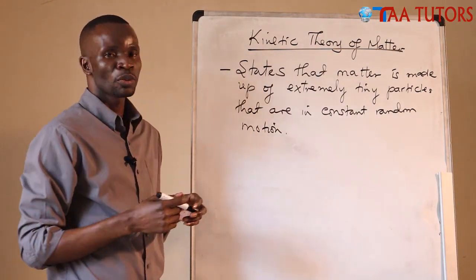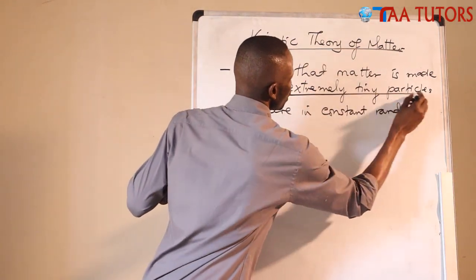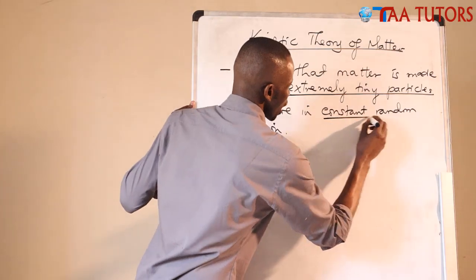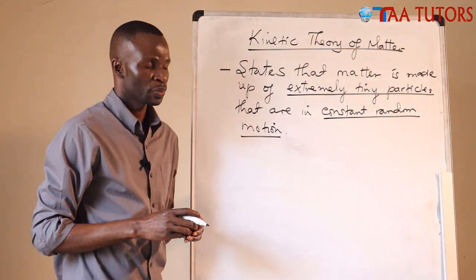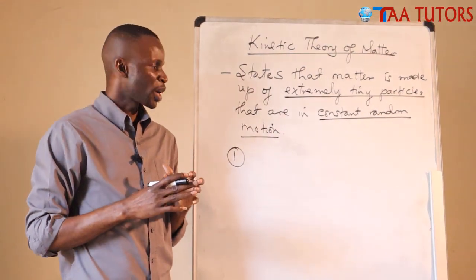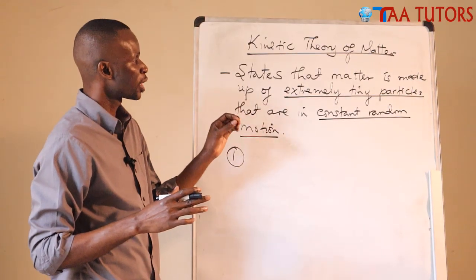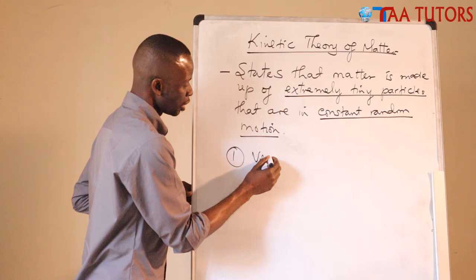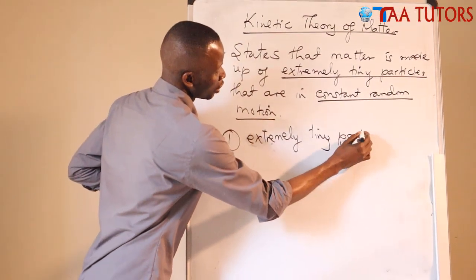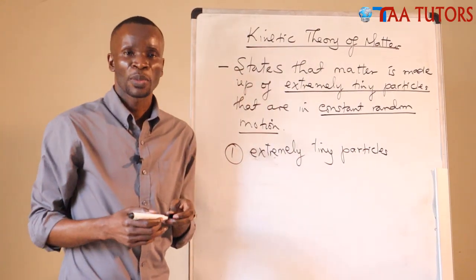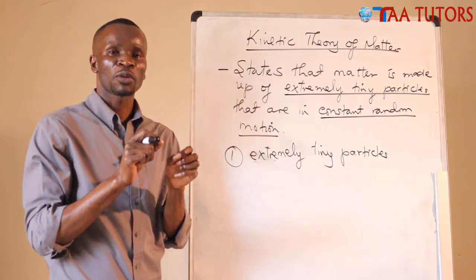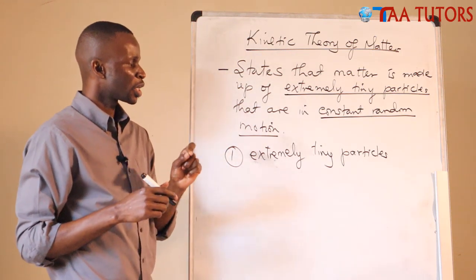We can break this statement into parts. The first part says 'extremely tiny particles' — matter is made up of extremely tiny particles. This means matter is made up of very small particles that we cannot even see with our naked eye. We can see a solid, but we cannot see the small particles that make up that solid. That is one of the things kinetic theory of matter tells us.